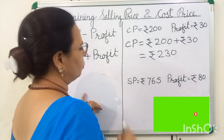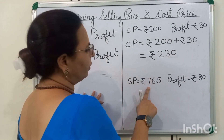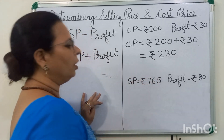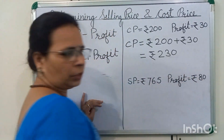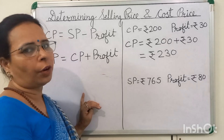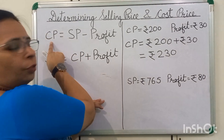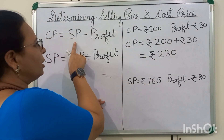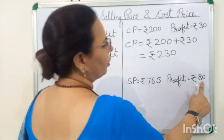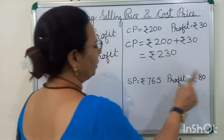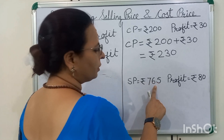See in another question. Selling price 765 is given and profit 80 rupees is given and we have to find cost price. What is the formula of cost price? Here we will subtract profit 80 rupees from 765.